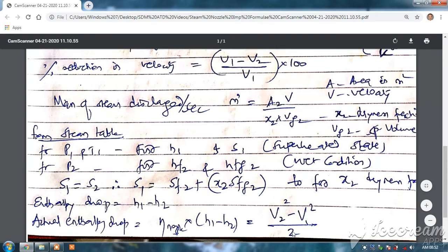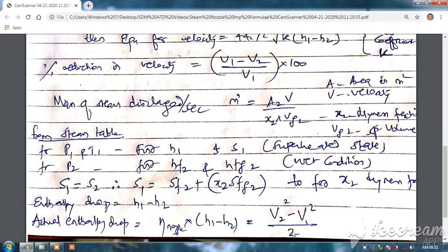And in many cases, they give you that inlet velocity is negligible, so we neglect v1 square.